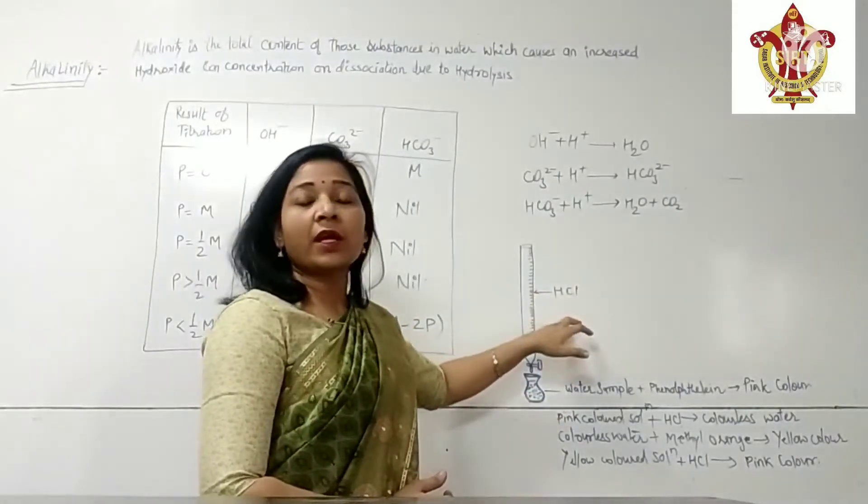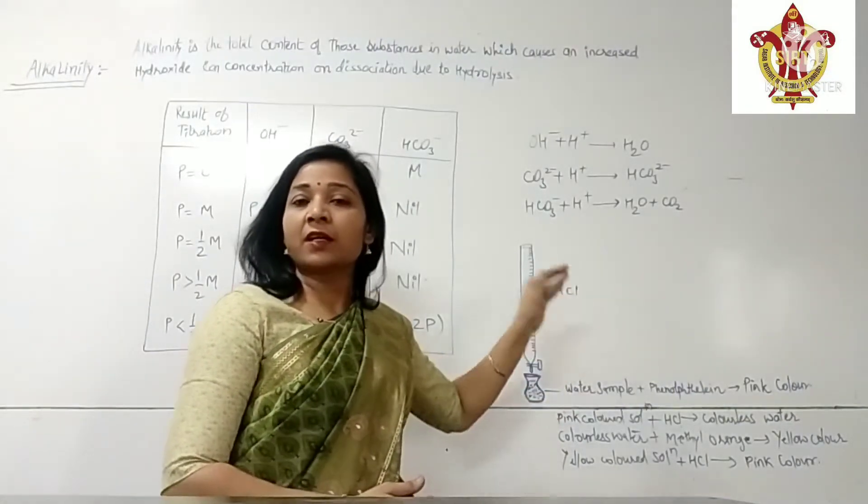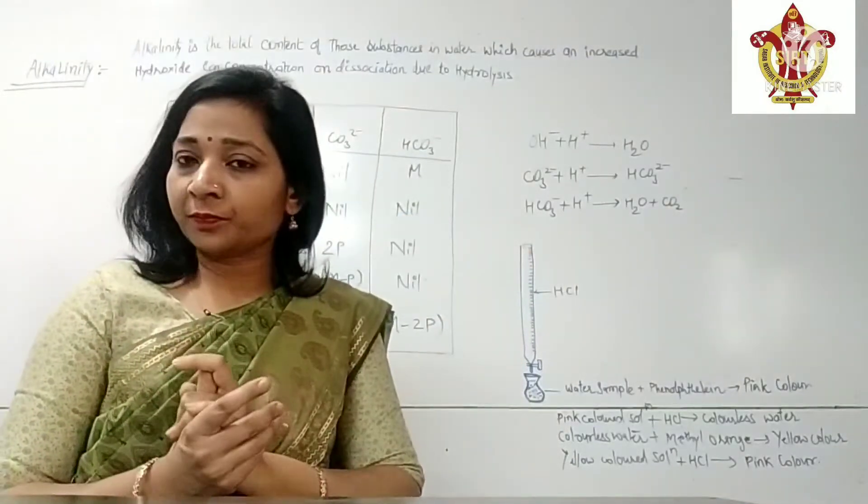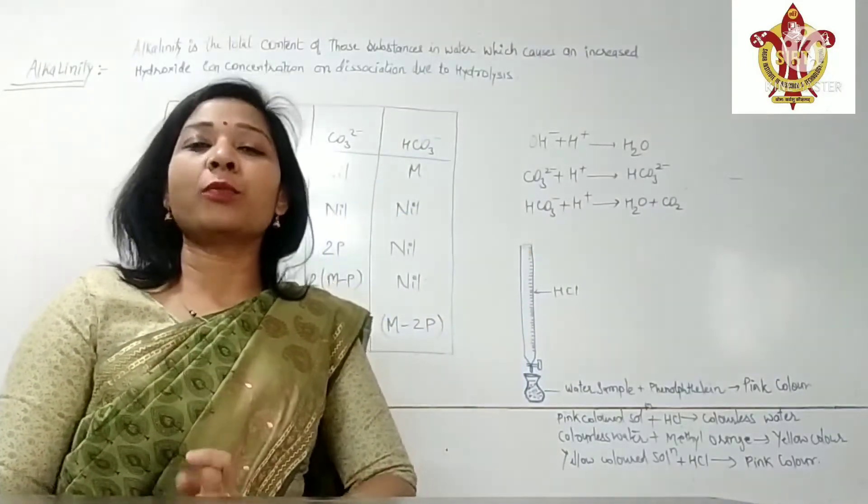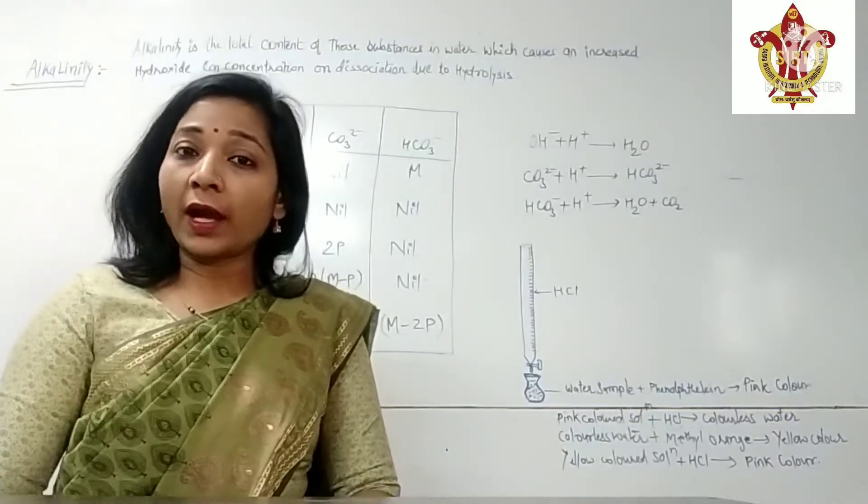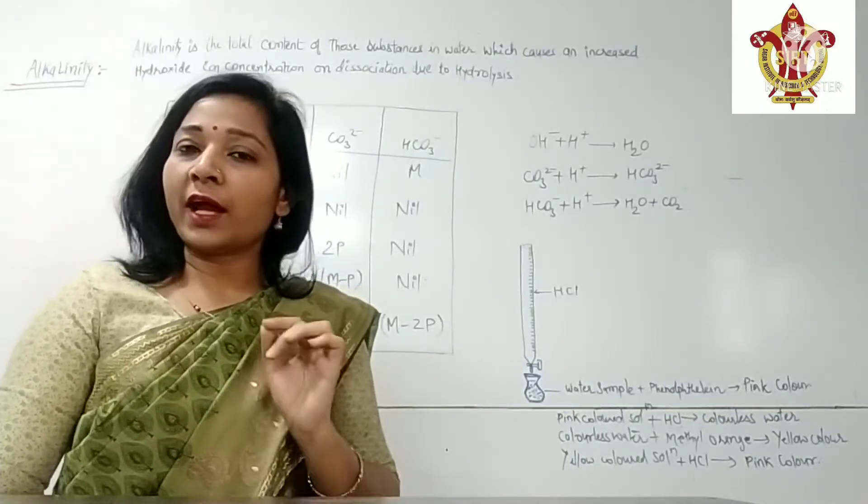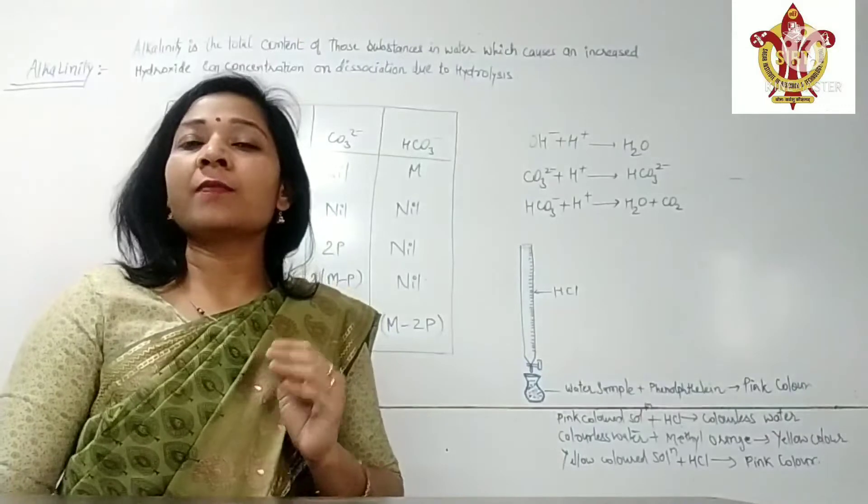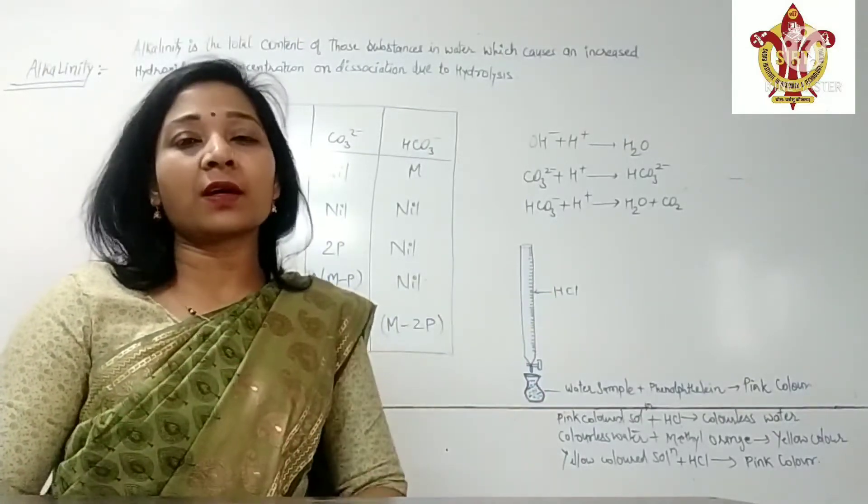The first endpoint when phenolphthalein indicator added and pink color disappears, that is known as P endpoint or phenolphthalein endpoint. And the second endpoint at which methyl orange indicator which provides yellow color changes to pink color.